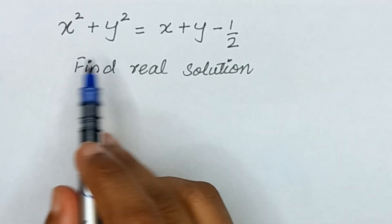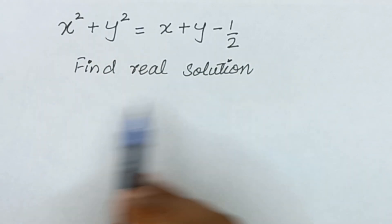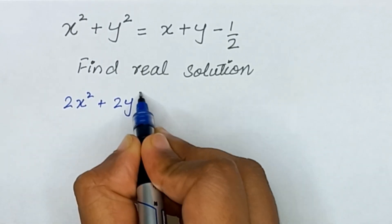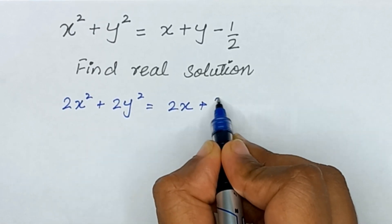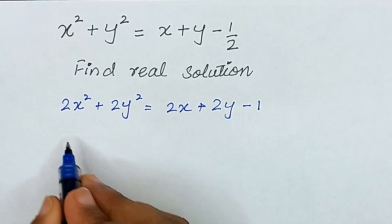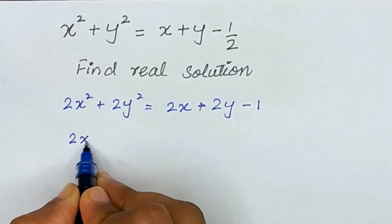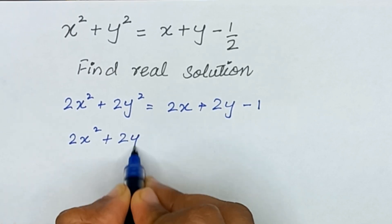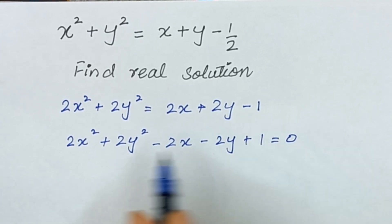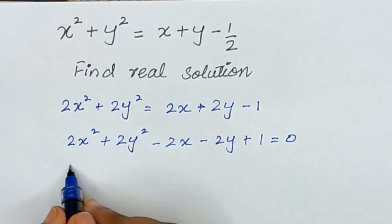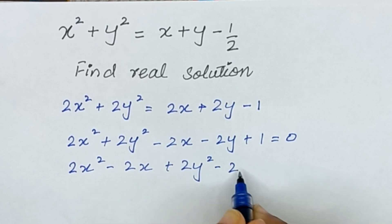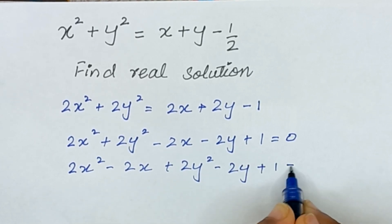First of all, I will multiply the whole equation by 2. So it will give us 2x² + 2y² = 2x + 2y - 1. Now let's rearrange this equation, so it will become 2x² + 2y² - 2x - 2y + 1 = 0. I can also write it as 2x² - 2x + 2y² - 2y + 1 = 0.